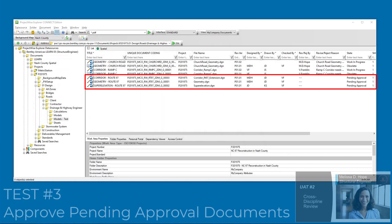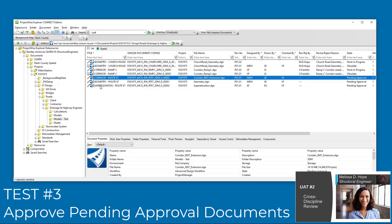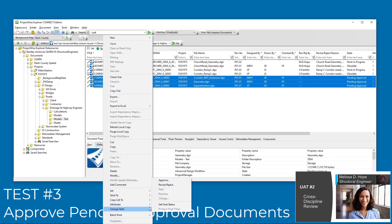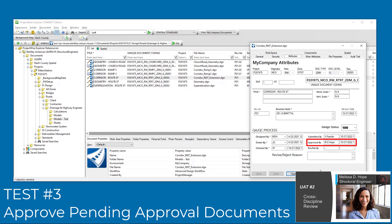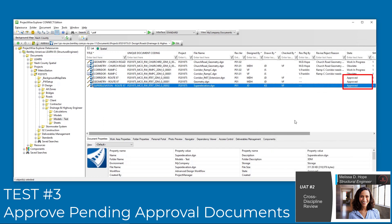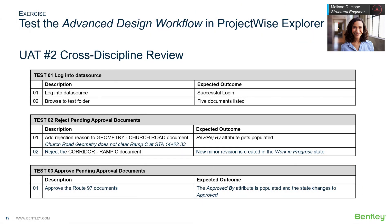Test 3. Melissa reviewed the Route 97 models and all seems well. She approves them all at once and verifies that the Approved By attribute is populated and that the state changed to approved for each Route 97 document. Test 3 passes.